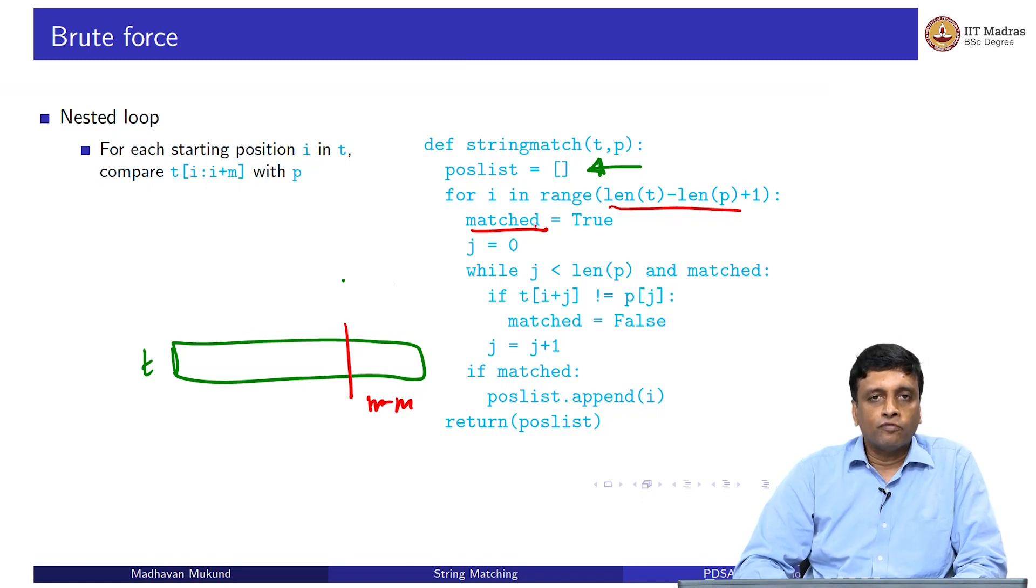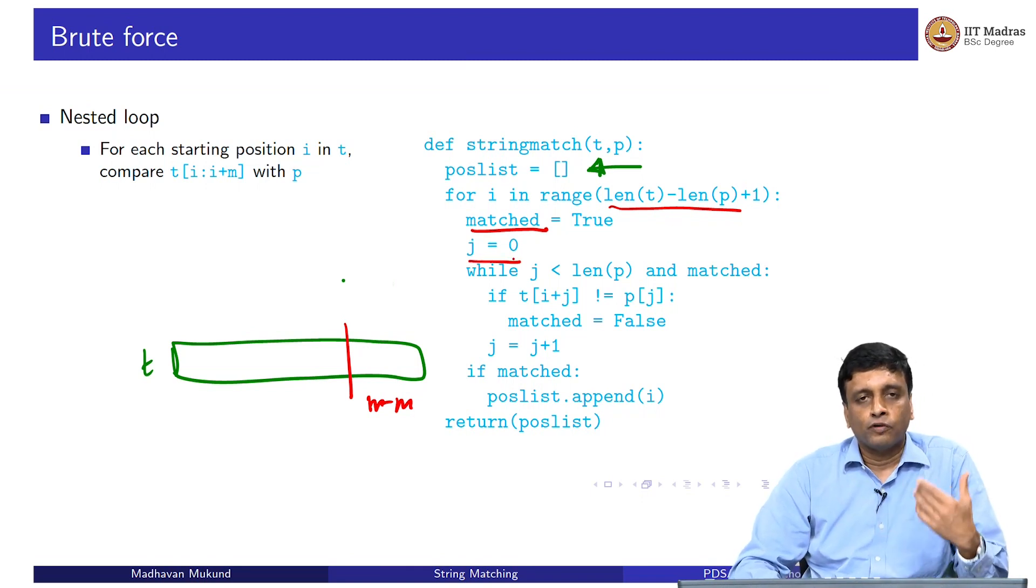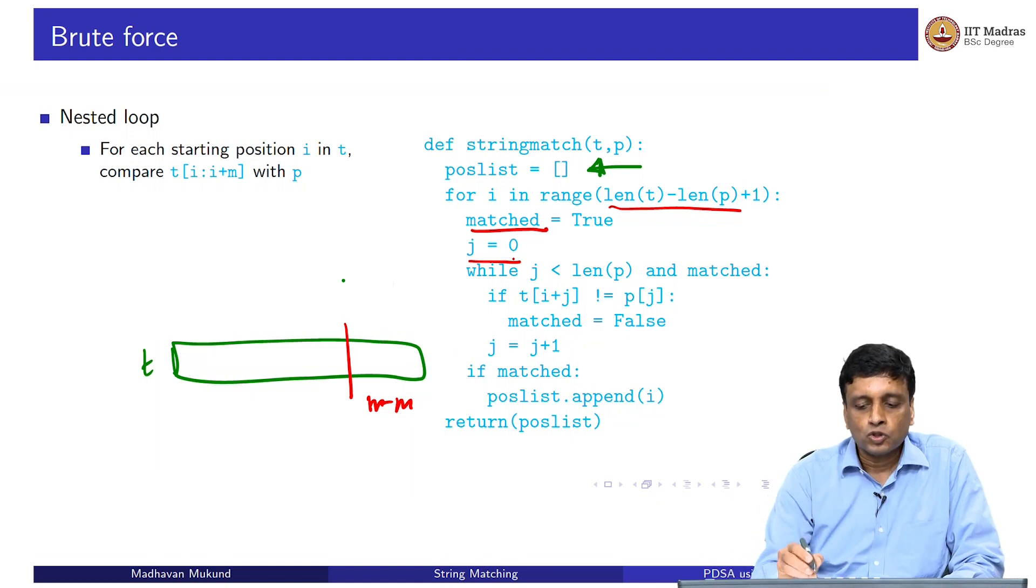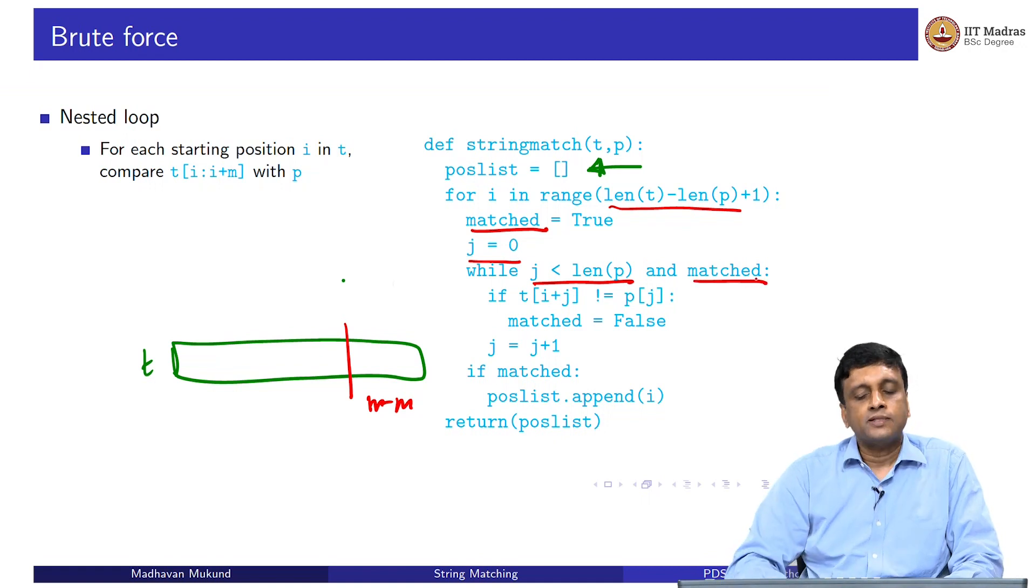And for starting from there, I initially assume that the slice matches. I have a Boolean matched, which I assume is true, which says that I have not found a mismatch in this slice yet. And I start with the first position in the slice, which is i plus j. I am going to go from i plus 0, i plus 1, i plus 2 up to i plus position length of p minus 1. I start with j equal to 0. So long as I am within that slice, and so long as I have not found a mismatch, I check the next position in the slice.